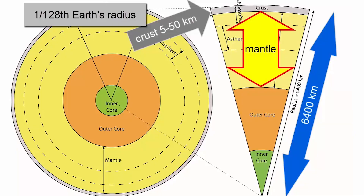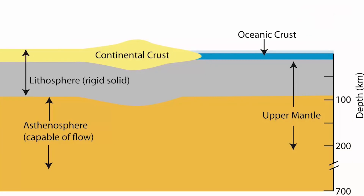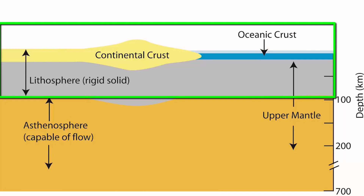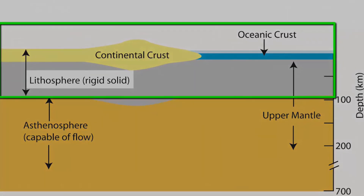Lithosphere refers to the hard and rigid part of the Earth which extends up to 100 km from the upper part of the crust to the uppermost solid mantle. The lithosphere can be classified as oceanic lithosphere and continental lithosphere. Oceanic lithosphere is related with oceanic crust and found in oceanic basins, whereas continental lithosphere is associated with continental crust.